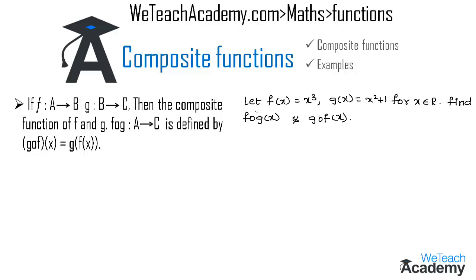For the first example, let f of x equal x cube and g of x equal x square plus 1, for every x belonging to R. We need to find f circle g of x and g circle f of x. First let us consider f circle g of x, which is defined by f of g of x.